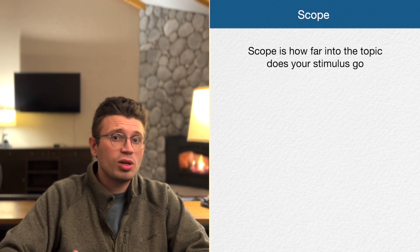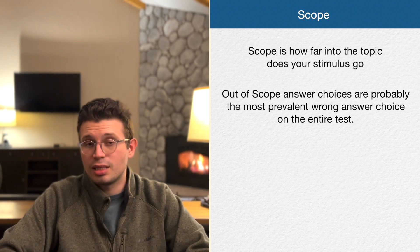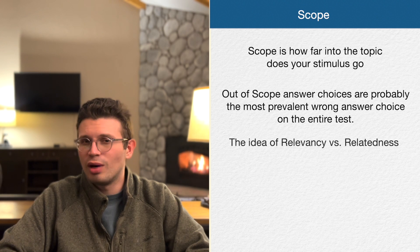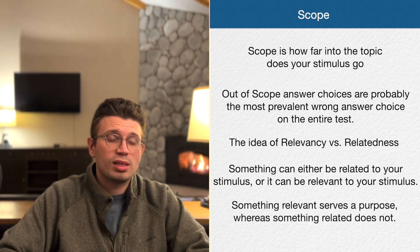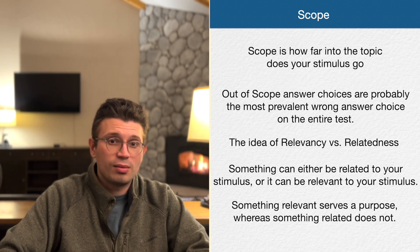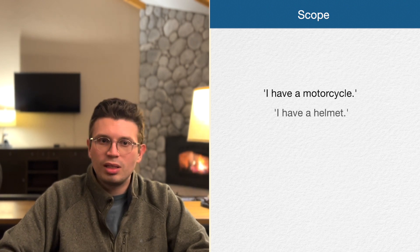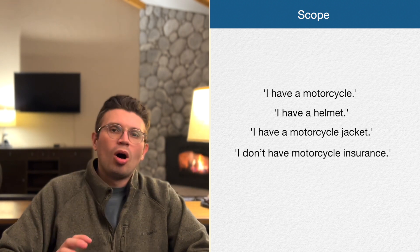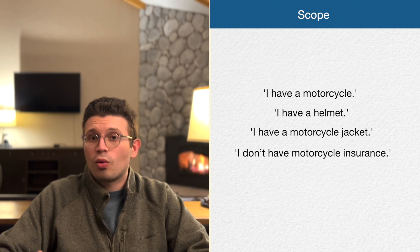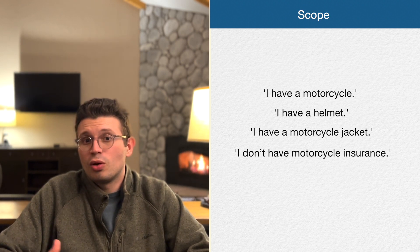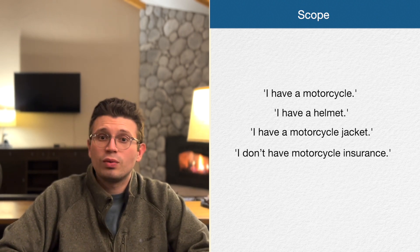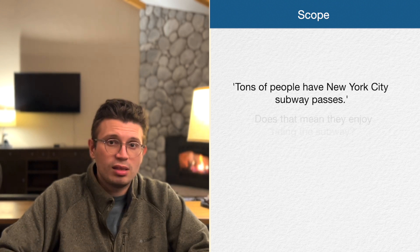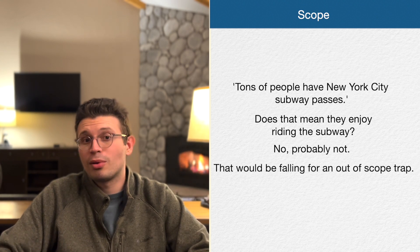Scope is how far into the topic your stimulus goes. Out-of-scope answer choices are probably the most prevalent wrong answer choice on the entire test. Something can either be related to your stimulus or relevant to it — something relevant serves a purpose, whereas something related does not. For example: if you have a motorcycle, a helmet, a motorcycle jacket, but no insurance, whether or not you have a motorcycle license is immaterial, and whether you enjoy motorcycling is just related — your enjoyment never comes into play.